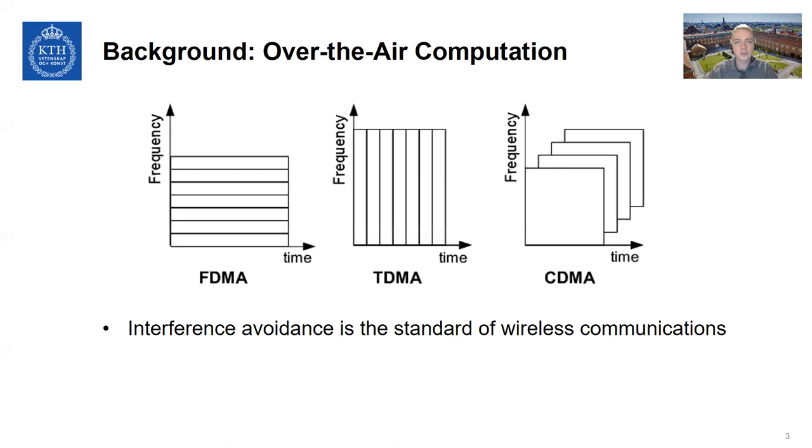So first I'll give a short background on over-the-air computation because it's not such a well-known technique. And to do that, we talk a little bit about interference avoidance. So in contemporary wireless networks, the standard is to employ interference avoidance. And by interference avoidance, I mean that we divide the radio resources between all transmitting devices.